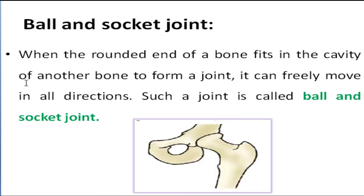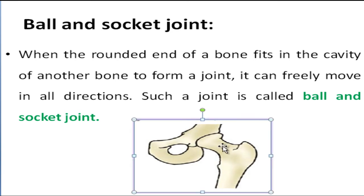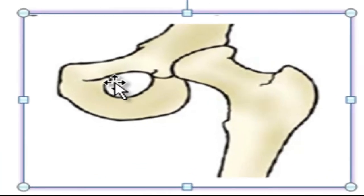Our next keyword is ball and socket joint. When the round end of a bone fits in the cavity of another bone to form a joint, it can freely move in all directions. Such a joint is called a ball and socket joint.